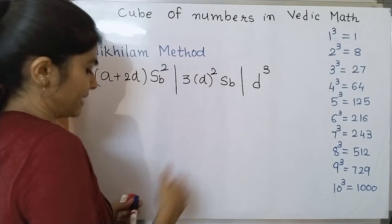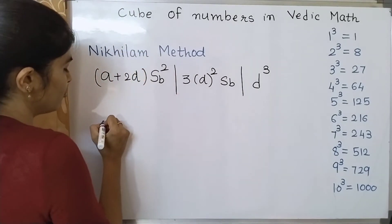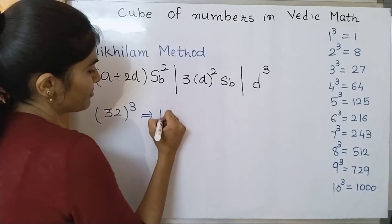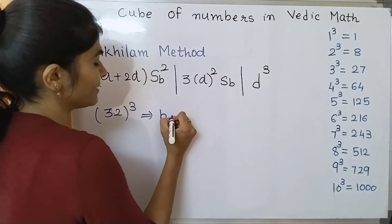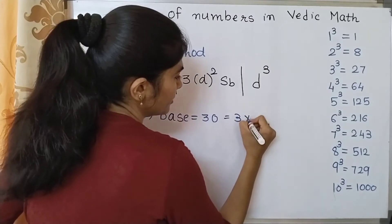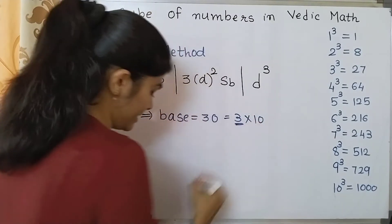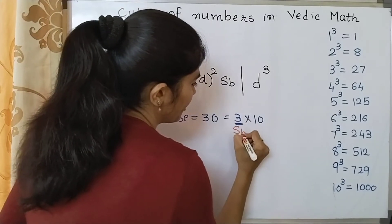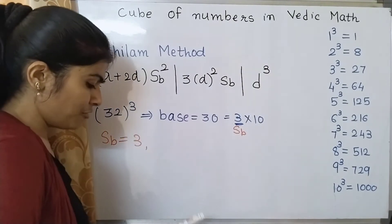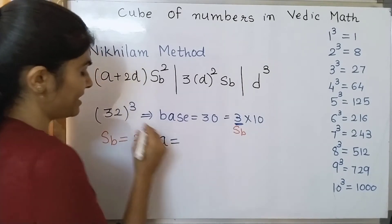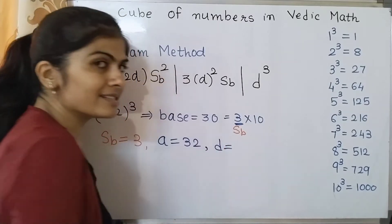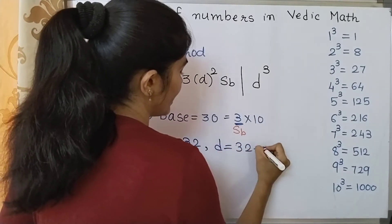Now what is the base that we need to see? Let's say we need to find out cube of 32. So I can say that what is my base? See its base is 10, but I can say that in this case my base is 30 and 30 is multiple of 3 times 10. So this 3 is what? It is sub base. Got it? My base is 30 and sub base is 3. Now how much is the difference? Variable a is the number to be cubed which is 32.